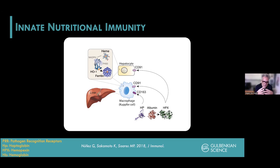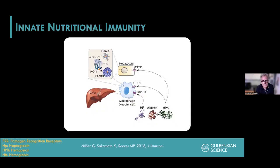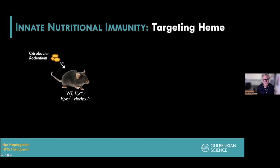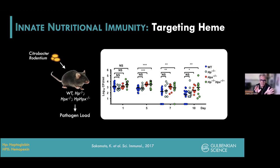Cells we usually don't associate with resistance mechanisms against infection, such as hepatocytes, can participate in nutritional immunity. To illustrate data from Gabriel Nunez's lab: we used mice that are wild type, deleted for haptoglobin, deleted for hemopexin, or deleted for both, and infected them with Citrobacter bacteria. As the infection progresses from day one to day ten, in the absence of haptoglobin and hemopexin, there's a one to two log difference in pathogen load, showing that capturing hemoglobin and heme is really critical in this host-pathogen interaction.